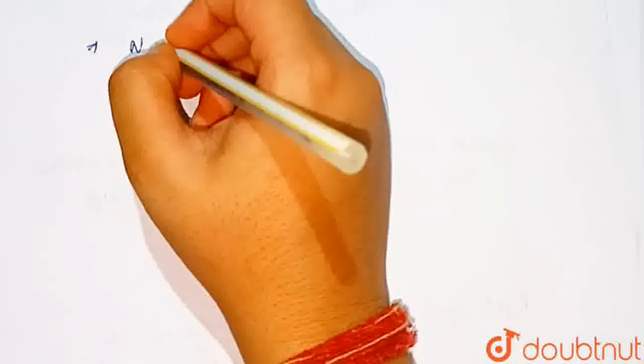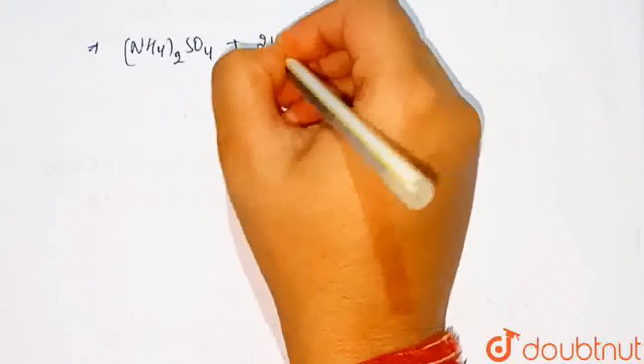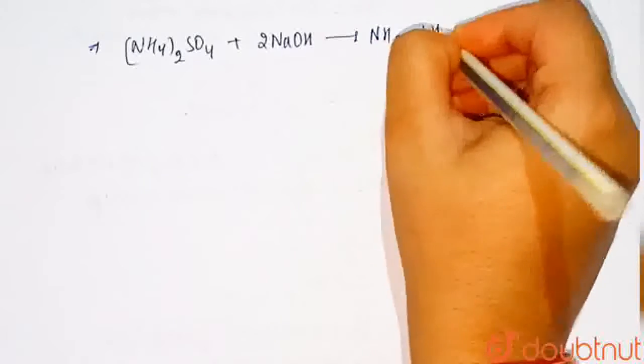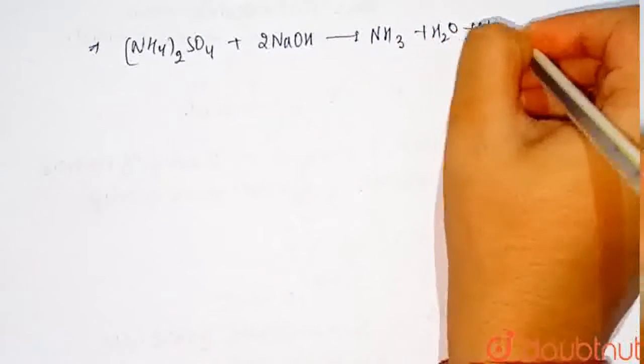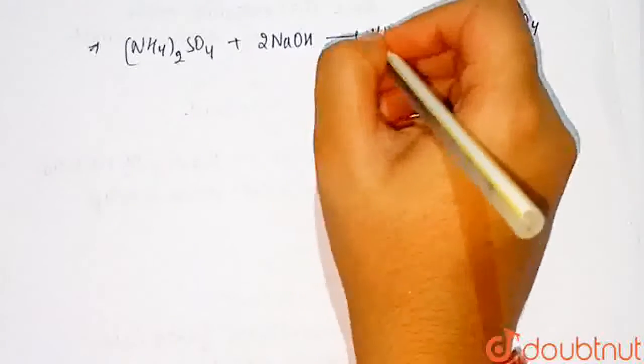we see that production of ammonia from ammonium sulfate, which is (NH4)2SO4, reacts with sodium hydroxide. It will form ammonia plus water plus sodium sulfate. Balance the equation here: 2, here 2, here 2.